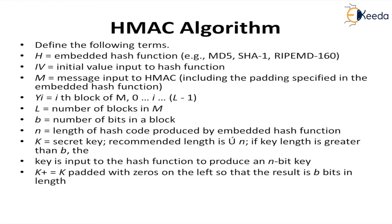HMAC algorithm can be defined with the following terms. H is the embedded hash function, for example MD5, SHA1, RIPEMD 160. IV is the initial value input to the hash function. M is the message input to HMAC including the padding specified in the embedded hash function. Yi is the ith block of the message M from 0 to L minus 1. L is the number of blocks in M and b is number of bits in a block. n is the length of the hash code produced by the embedded hash function. K is the secret key. Recommended length is n, and if key length is greater than b, the key is input to the hash function to produce the n bit key. K plus is K padded with zeros on the left so that the result is b bits in length.